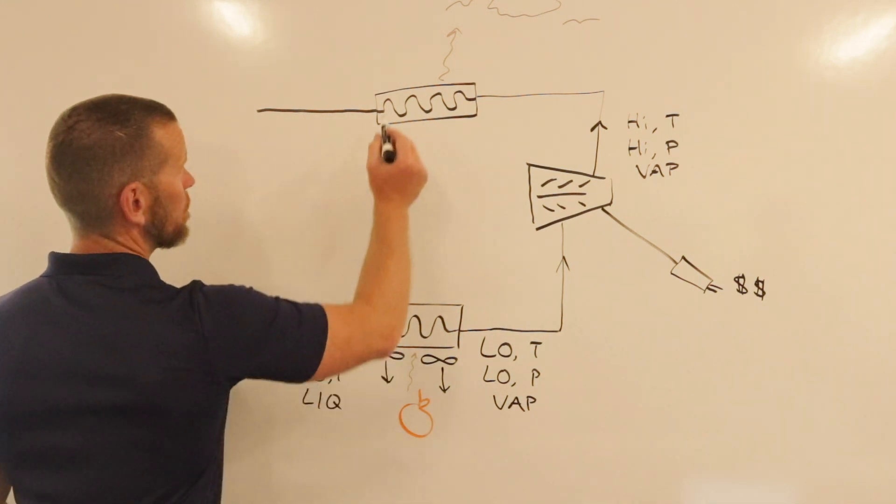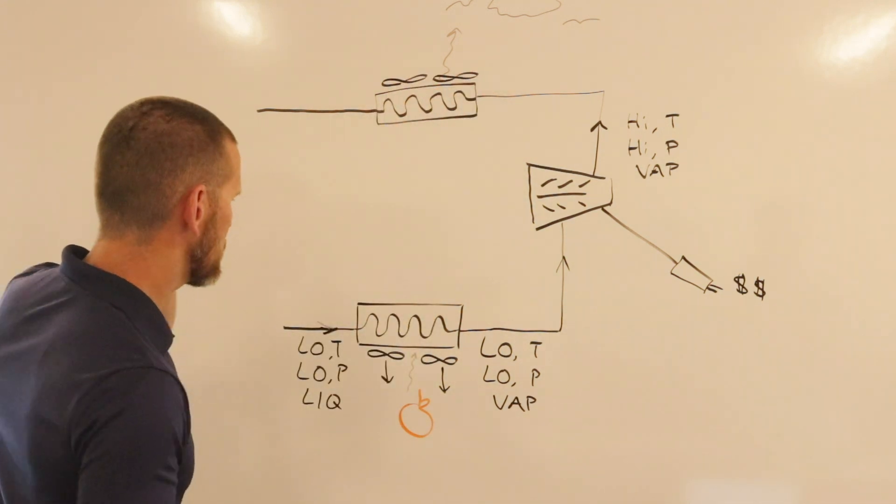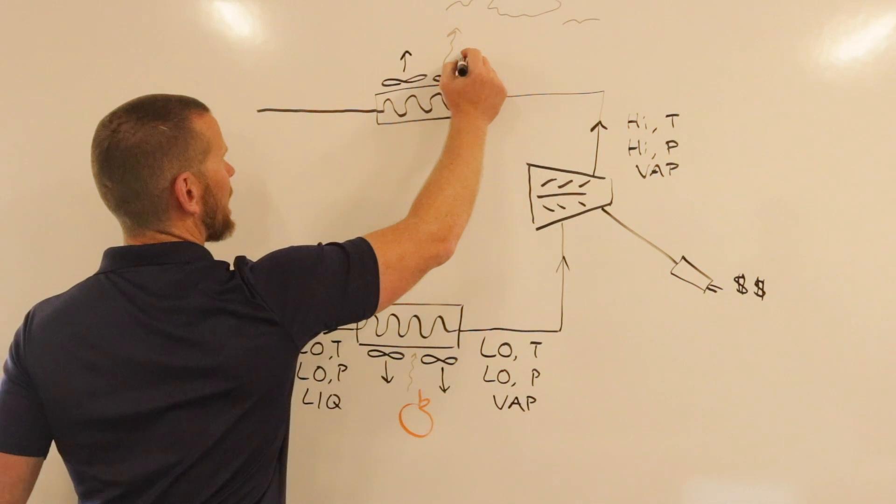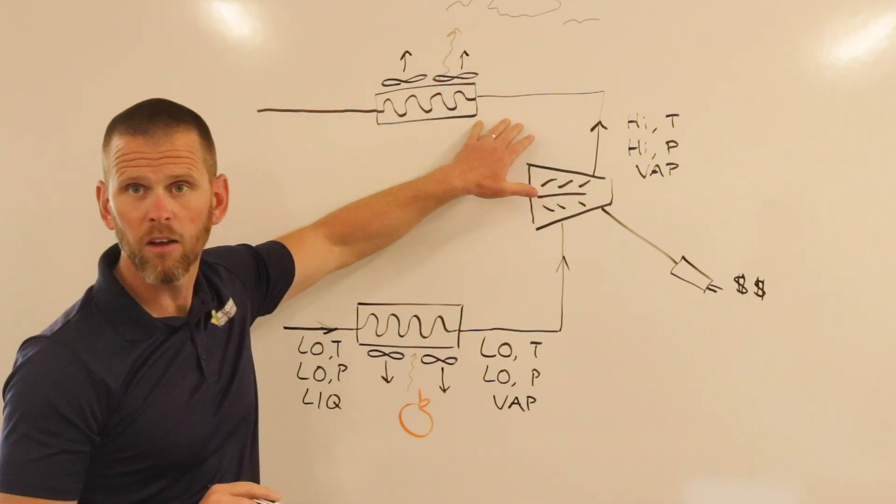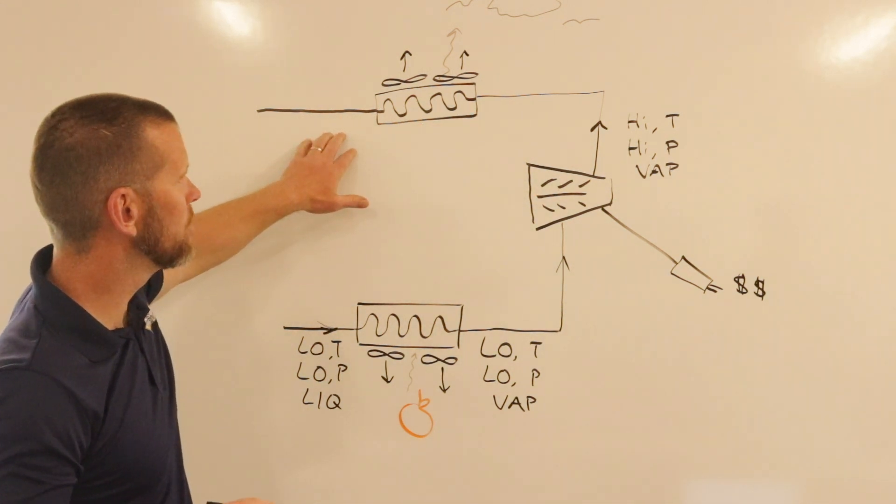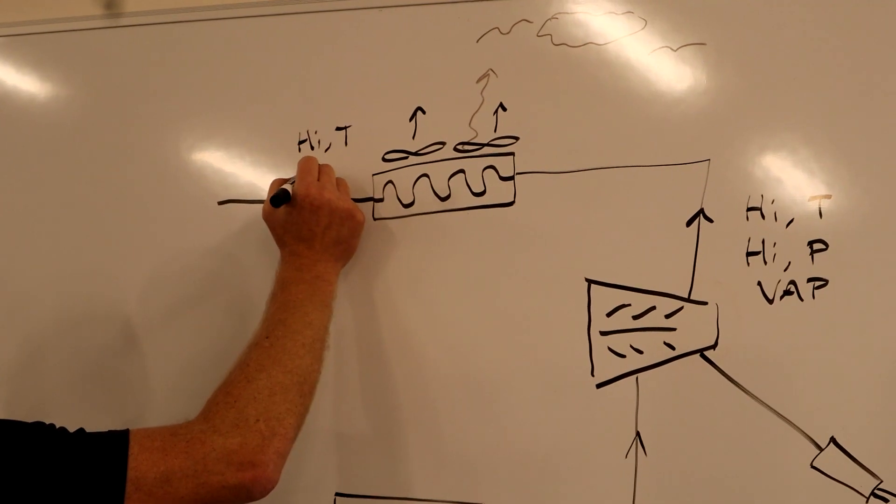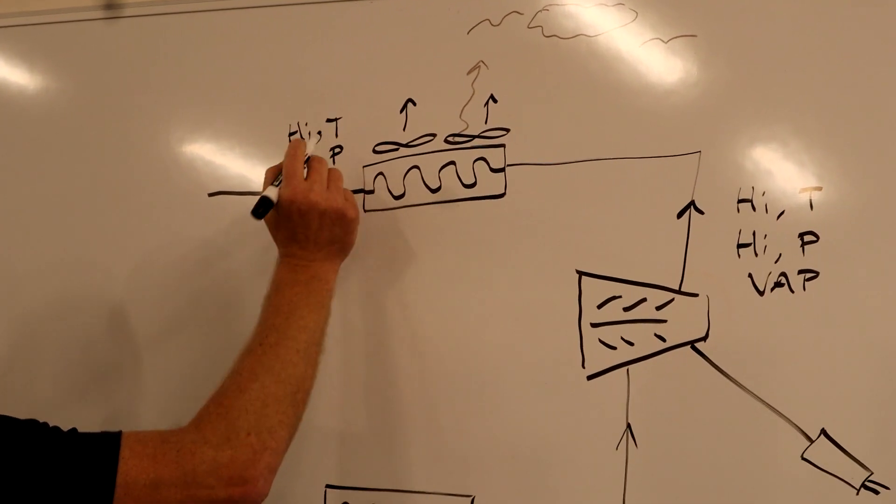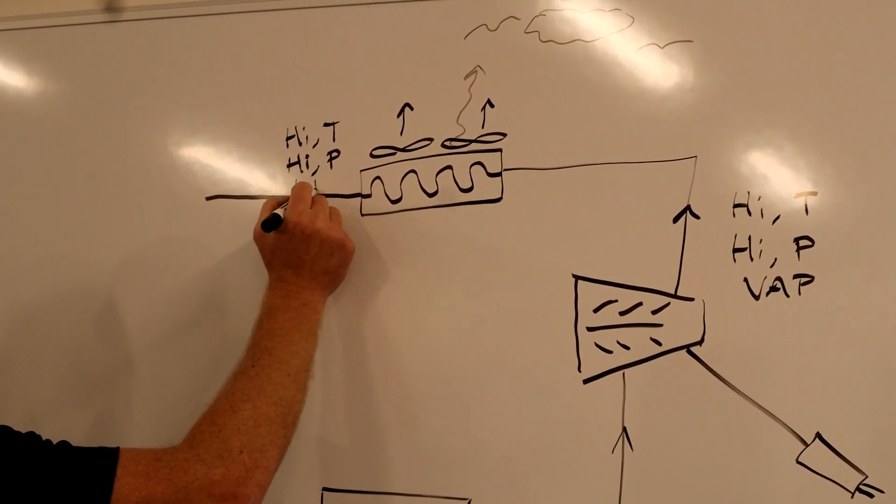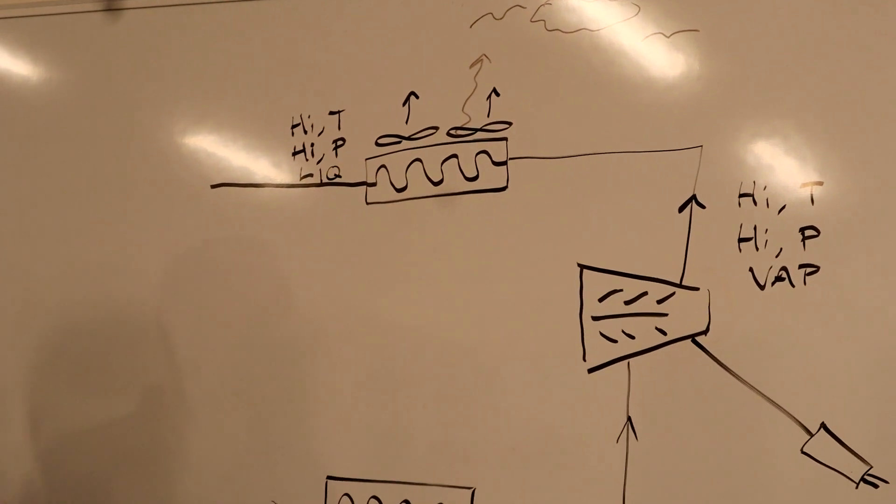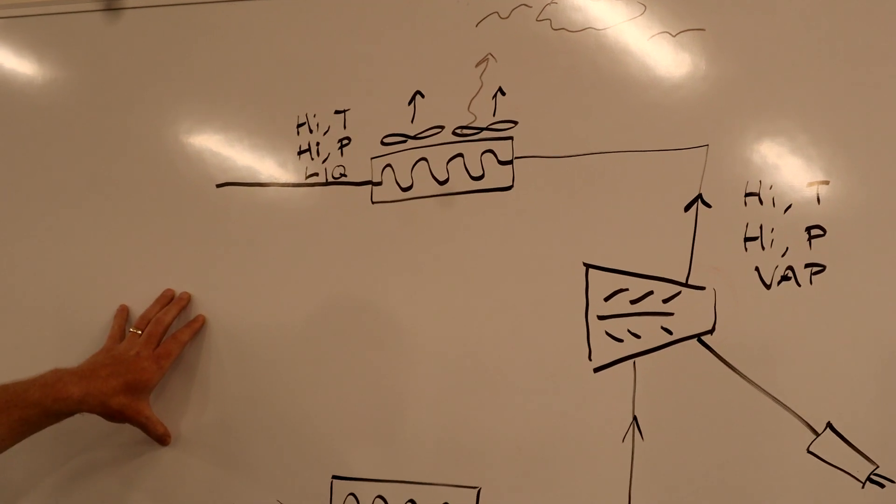The condenser uses fans, often water pumps as well, and evaporative condensers to help expedite the heat exchange process. High temperature, high pressure vapor enters the condenser, but it leaves still at high temperature and high pressure. But as the name says, it leaves condensed as liquid. Now we have high temperature, high pressure liquid. We still haven't finished our cycle.